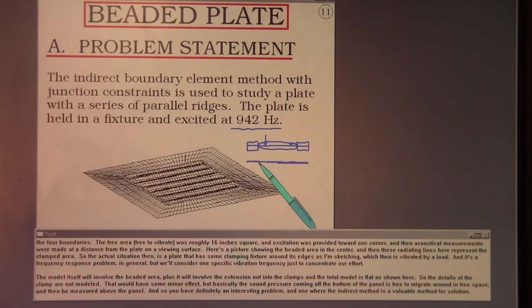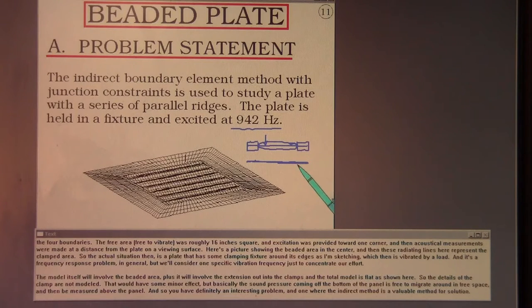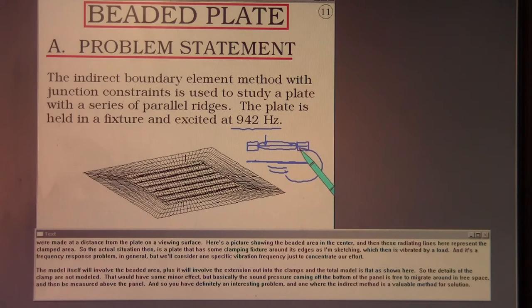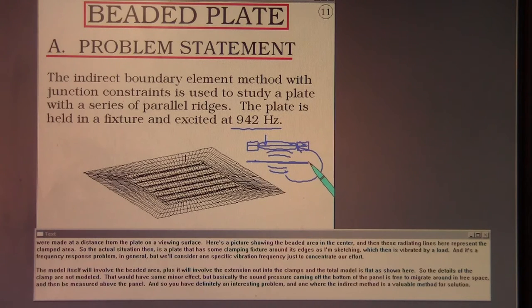The total model is flat as shown here, so the details of the clamp are not modeled. That would have some minor effect. But basically the sound pressure coming off the bottom of the panel is free to migrate around in free space and then be measured above the panel. So you have definitely an interesting problem, and one where the indirect method is a valuable method for solution.